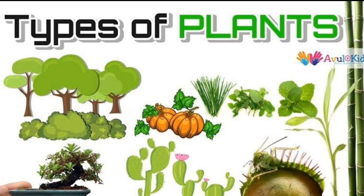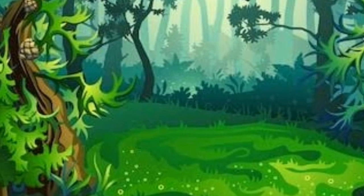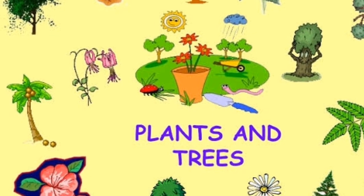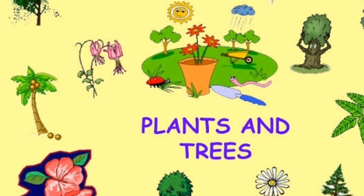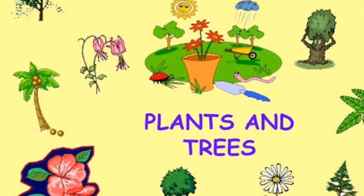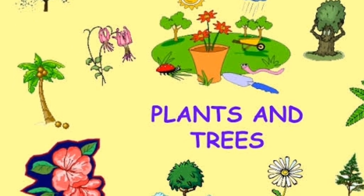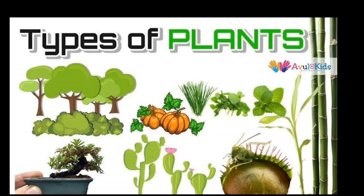Hello students! Today I'm going to discuss Science, second lesson: types of plants. We see different types of plants growing around us. They make our world green and beautiful. Plants and trees are life for us — they keep our surroundings fresh and clean. Now let us see the details about different types of plants and trees.